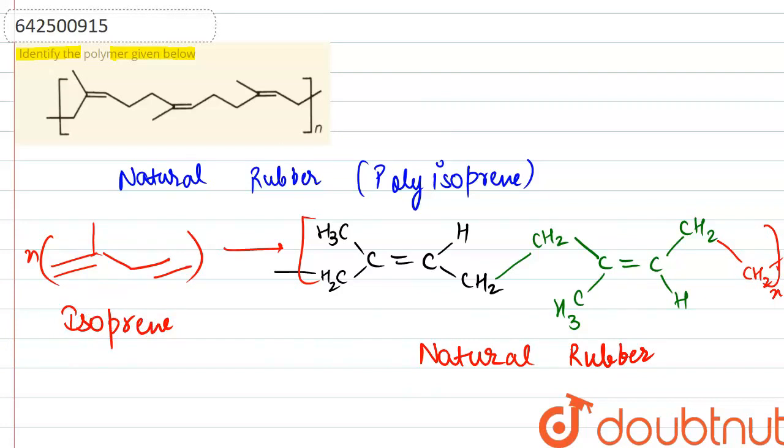And the addition that happens here is basically 1,4 addition. 1,4 addition of isoprene that would be leading to the formation of the polyisoprene, that is natural rubber.